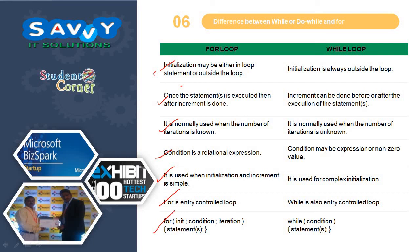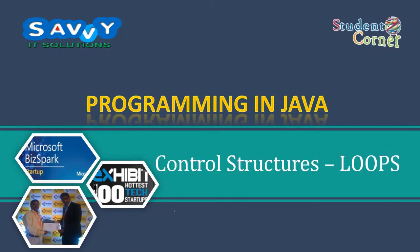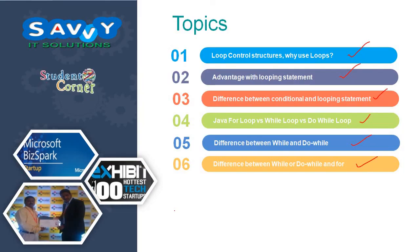So, my dear viewers, from now onwards the concepts are very very important. If you know while, do-while, and for very well, you are the best and master in programming language. Today what we discussed: loop control structures and why use loops, advantages with loop statements, difference between conditional and loop statements, Java for loop versus while loop versus do-while loop, difference between while and do-while, and difference between while or do-while and for. Thank you.